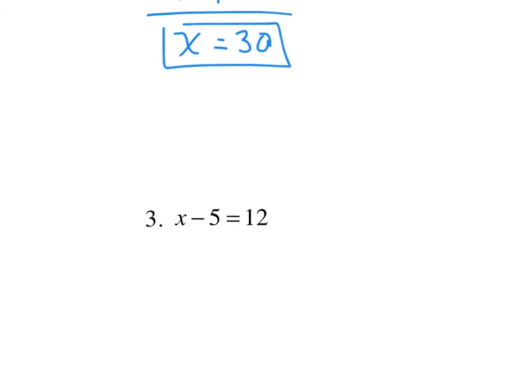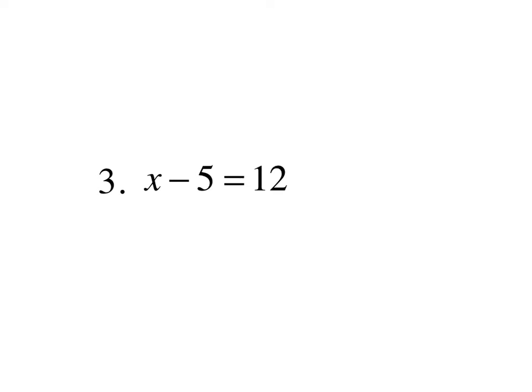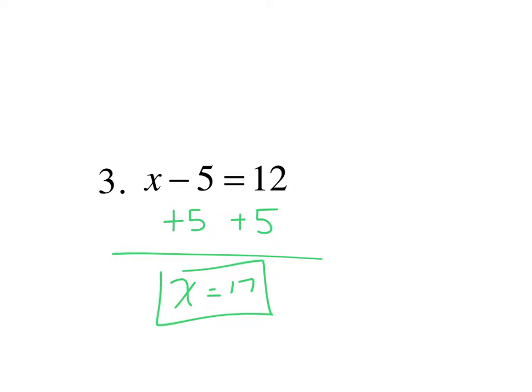Now let's go on to our next example. I have to ask myself, how do I get rid of a minus 5? Well, to get rid of a minus 5, you simply add 5. So, add 5 to both sides, and I get x equals 17, because 12 plus 5 is 17.